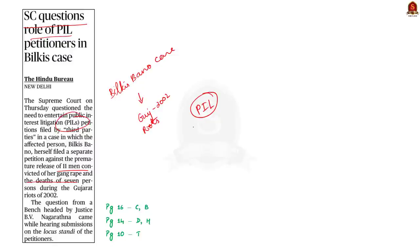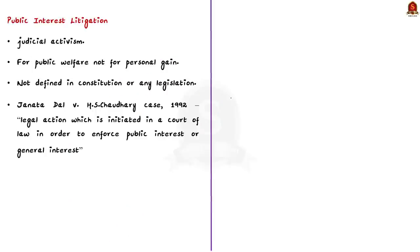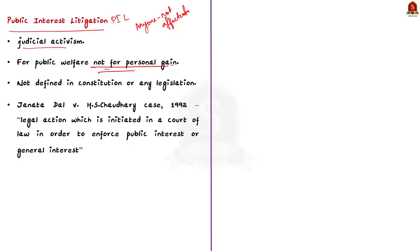In our discussion, we will see some basic information about PIL — Public Interest Litigation. It is when anyone, even if he is not directly affected, can go to the court to talk about a problem that affects many people. This is usually done to help the public or society and not for personal gain. It is like asking the court to solve a problem that's important for everyone.